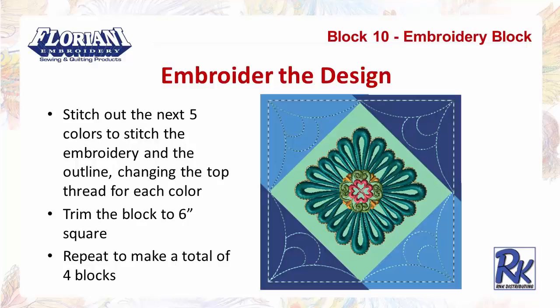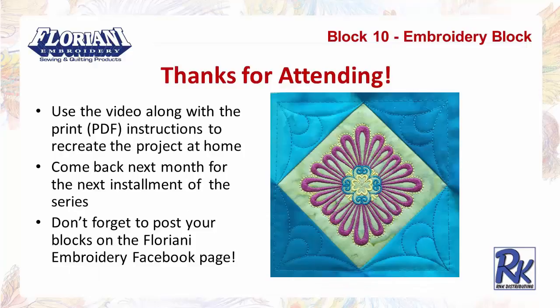Stitch the next five colors for the embroidery and outline, changing the top thread for each color. Trim the block to six inches square and repeat the whole procedure to make a total of four blocks. That completes this month's block. We hope you'll use the video along with the printed PDF instructions to recreate this project at home. Come back next month for the next installment, and don't forget to post your blocks on the Floriani Embroidery Facebook page — at the end of the series there will be a contest for the best-looking blocks and overall quilts.